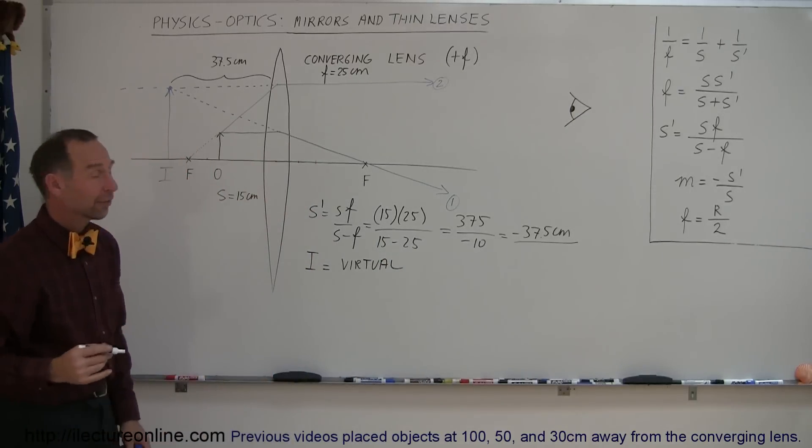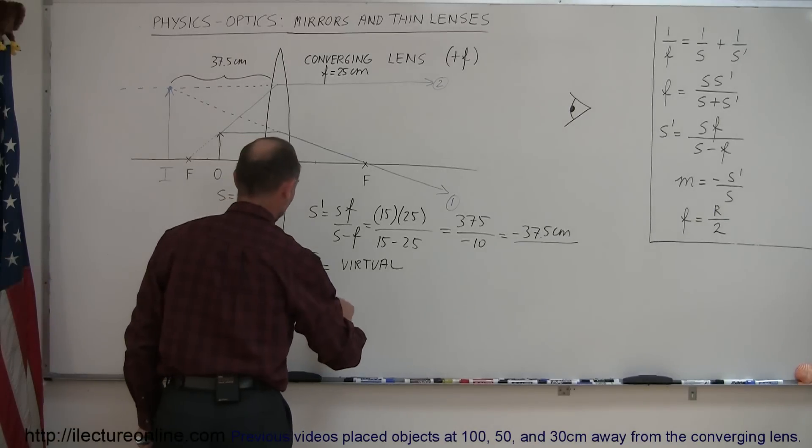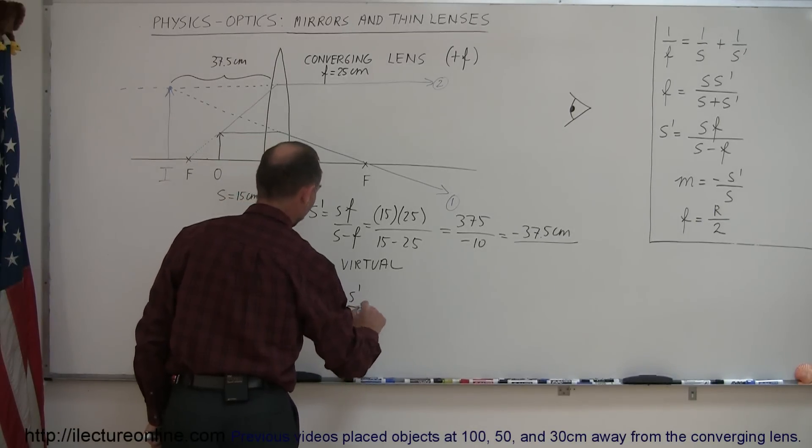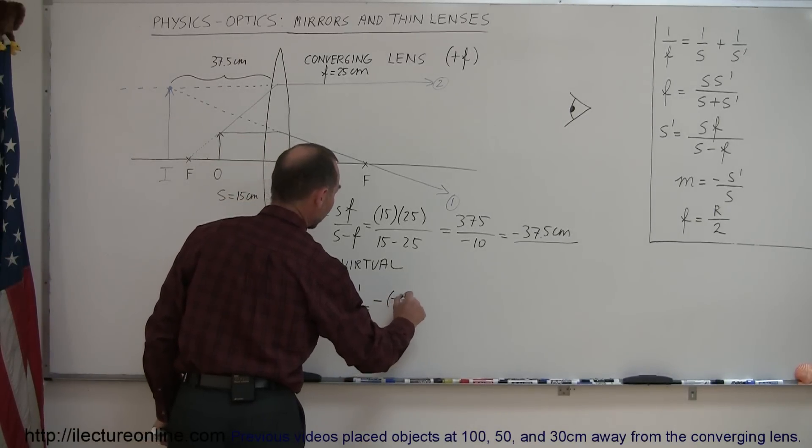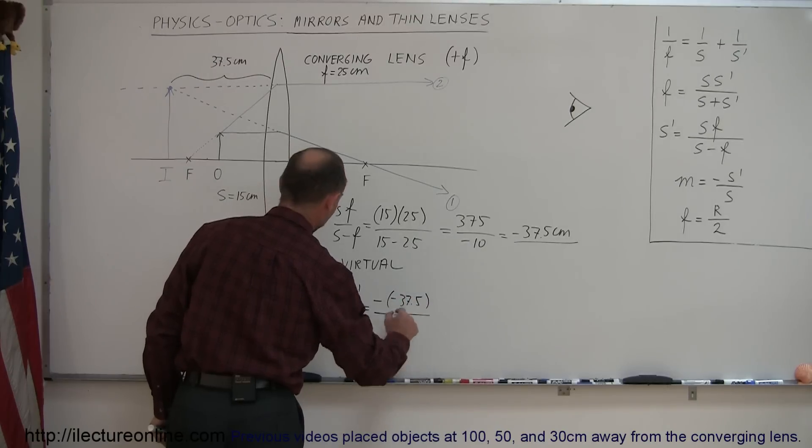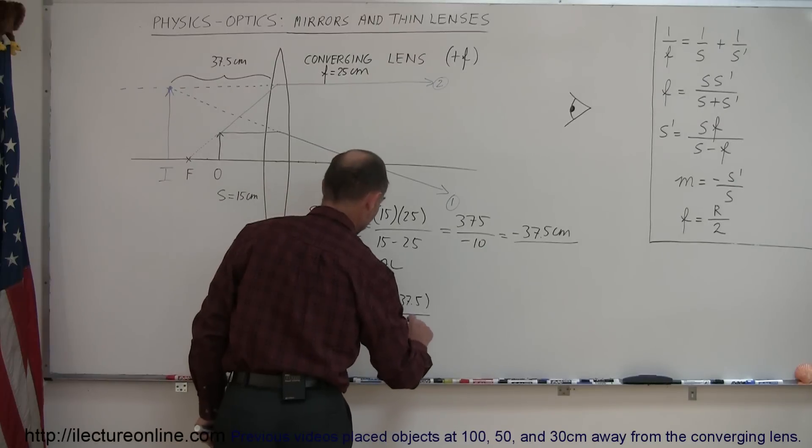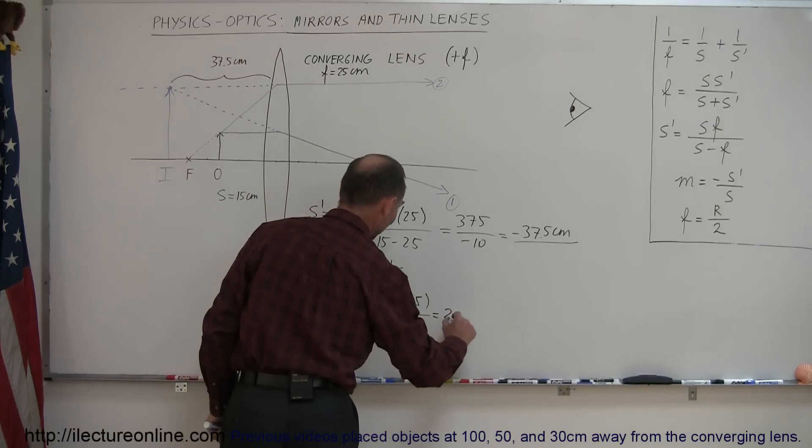Okay, now for the magnification. So M is equal to minus S' over S. So minus a minus 37.5 divided by S, which is a positive 15. So this would be a positive 2.5.